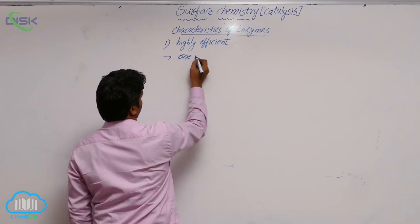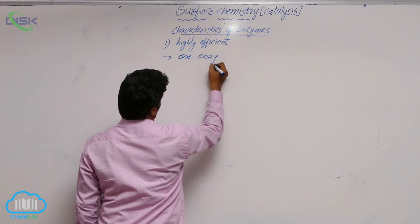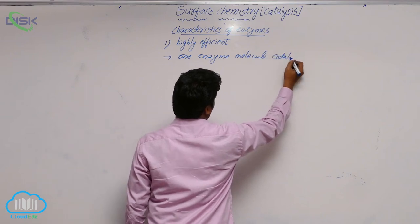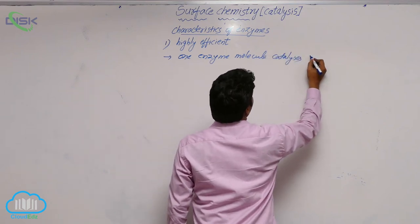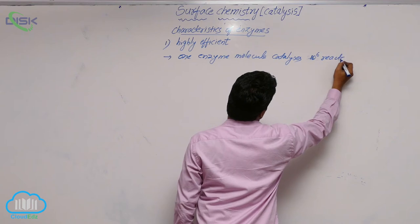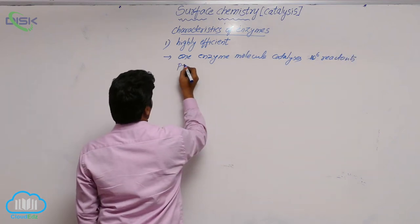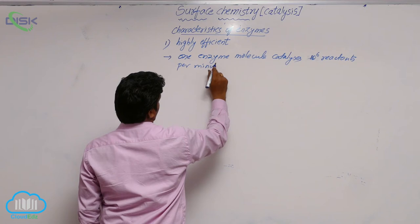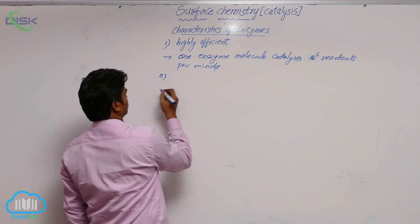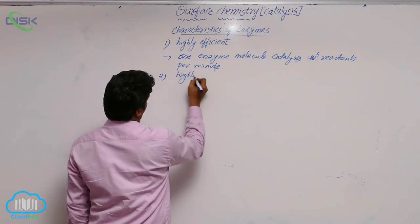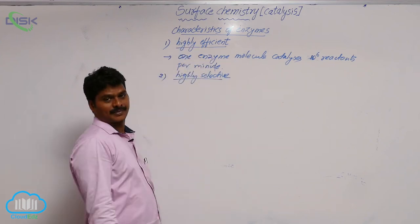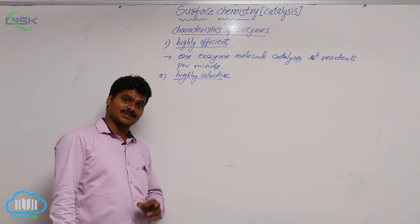One enzyme molecule catalyzes or transforms 1 million — that is 10 to the power 6 — reactants per minute. This makes enzymes highly efficient. The second characteristic is that enzymes are highly selective.